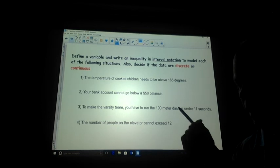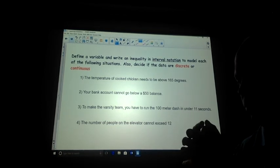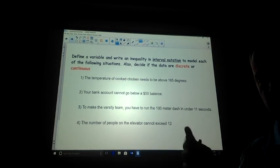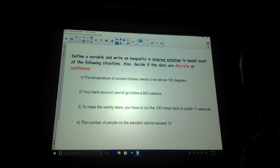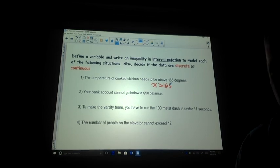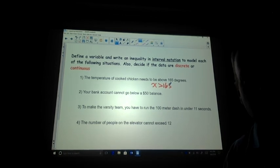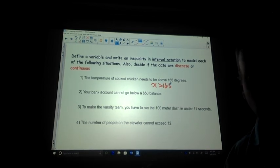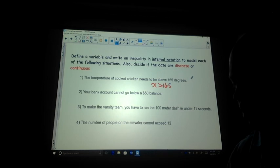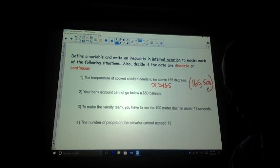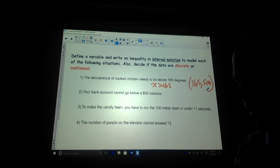Define a variable and write an inequality in interval notation to model each of the following situations. Also decide if it's discrete or continuous. Continuous means it goes forever. Discrete means it stops and starts. So it says the temperature of cooked chicken needs to be above 165 degrees. So I want my chicken to be above 165 degrees. Do you think we can really get our oven up to an infinite temperature? The answer is no. So I'd say the highest temperature of our stove could be like 500 degrees. So this one would go from 165 up to the maximum temperature of the oven, 500 degrees. That's interval notation. Your bank account cannot go below a balance of $50. So x has got to be bigger than or equal to 50. But how big can your bank account get? However much money is in the world. This is going to be a square bracket because it's going to go from 50, and it's going to go to an infinite amount of money.